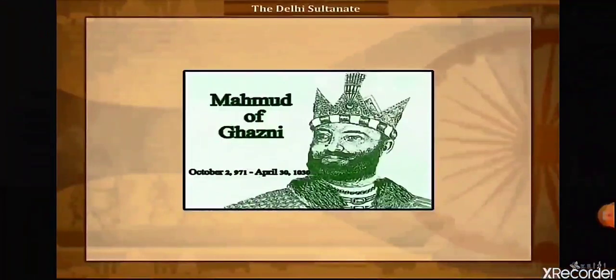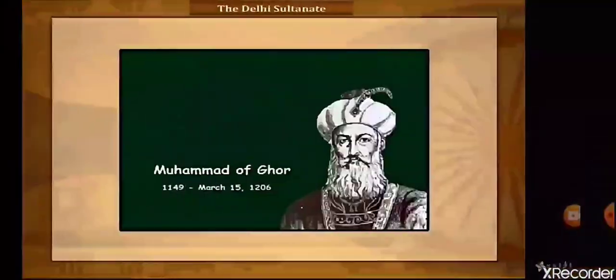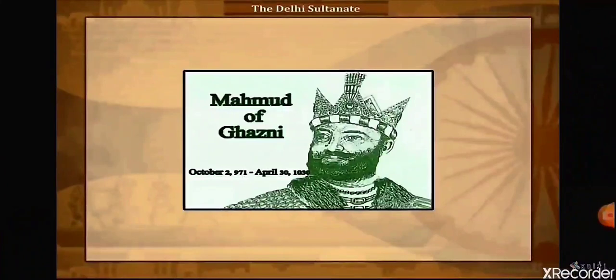The two most prominent Turkish invaders were Mahmud of Ghazni and Muhammad Gori. Mahmud of Ghazni learned about the wealth of India and invaded 17 times in the span of 25 years. He did not want to rule over India — his invasions were undertaken purely to capture the country's wealth. During each of his raids, he attacked wealthy temples and took everything back to Ghazni.